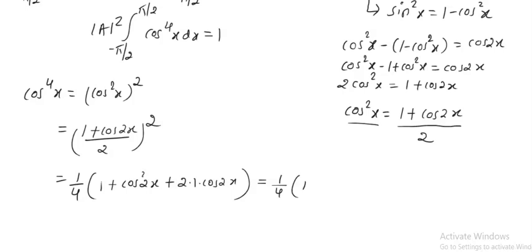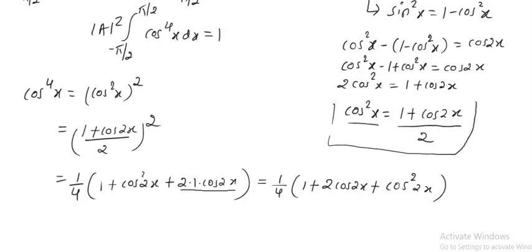This equals 1 by 4 into (1 plus 2 cos 2x plus cos squared 2x). We again have cos squared 2x, so we can replace it using the same formula: cos squared 2x equals (1 plus cos 4x) divided by 2.